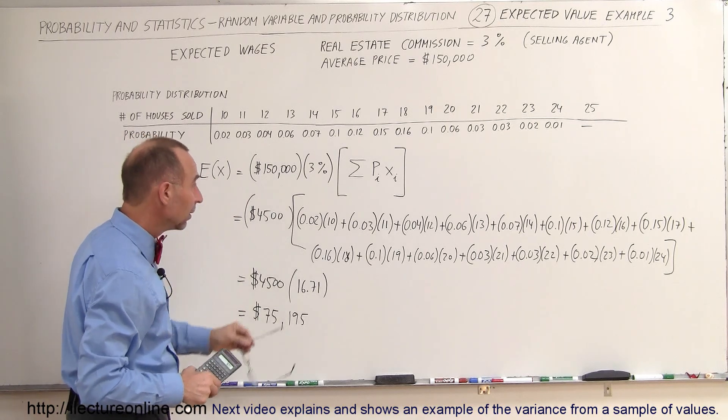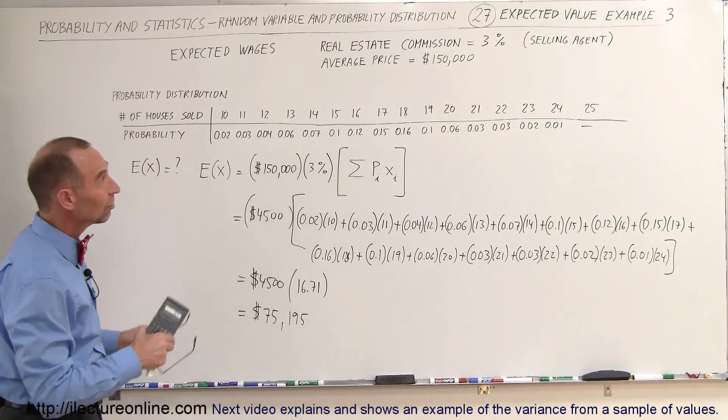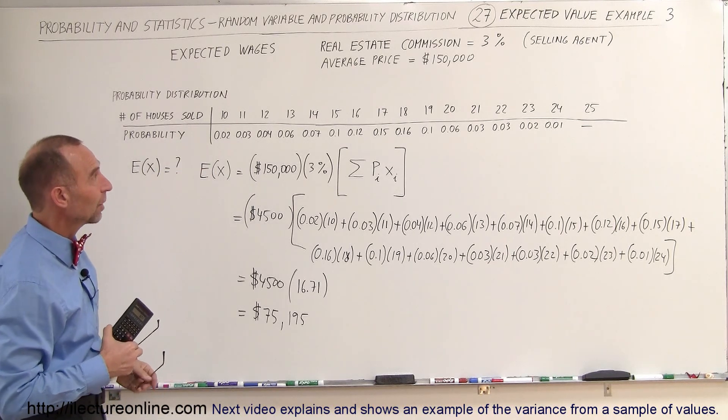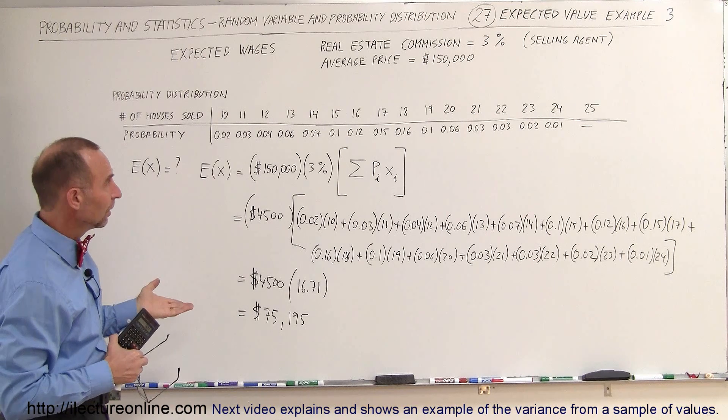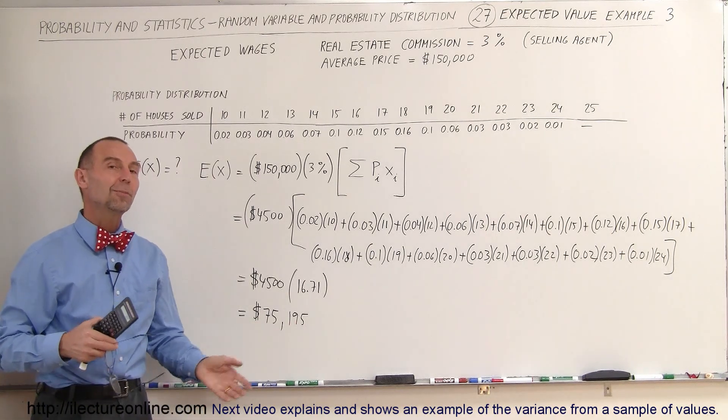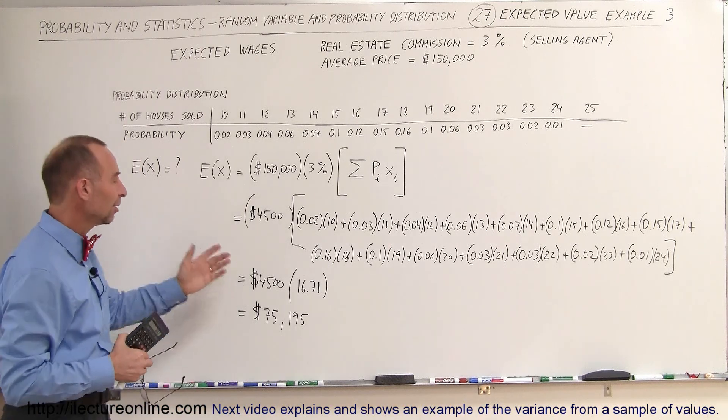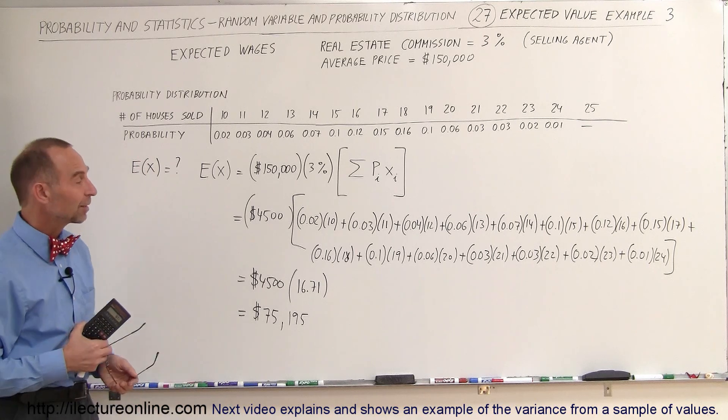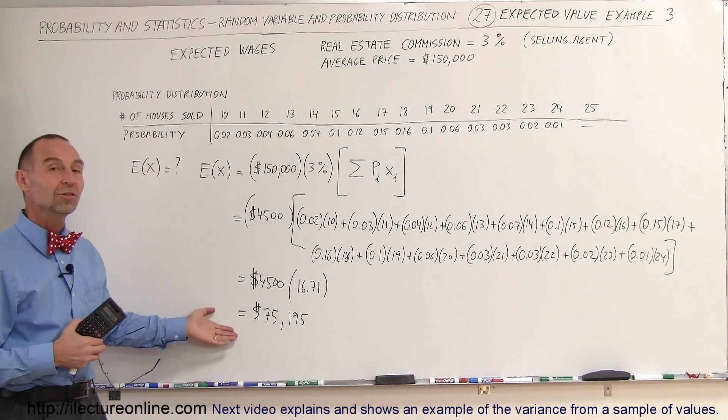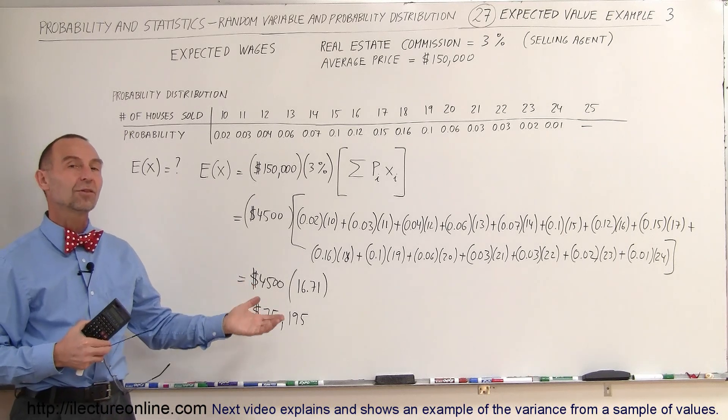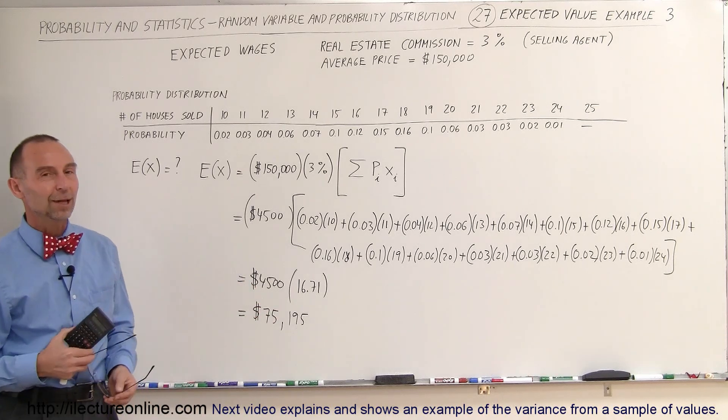So the real estate agent, the selling agent with average selling price of $150,000 per house, 3% commission, can expect to earn $75,195 if our predictions were correct and the probability distribution is reasonable for that area. And that's how we use expected value to come up with predictions of how much people can expect to make, how many houses can be expected to sell, and so forth. And that's how we do that.